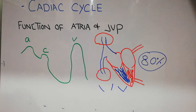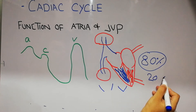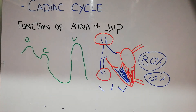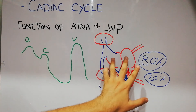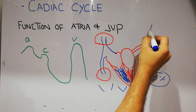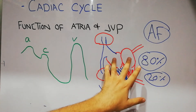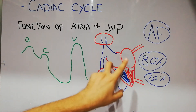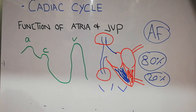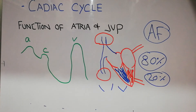Atrial contraction is responsible for only 20 percent of the blood that comes into the ventricle. Normally, if the atria stop contracting — as occurs in atrial fibrillation or AF, a very common condition in which atrial contraction is not occurring — still 80 percent of blood will be coming to the ventricles, and the ventricles will easily pump this blood into the lungs and into the whole body.